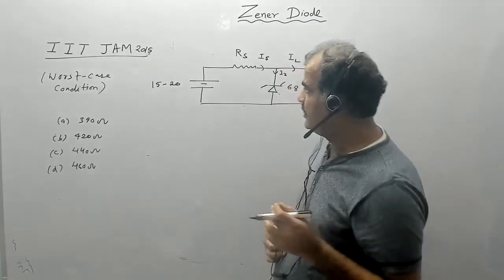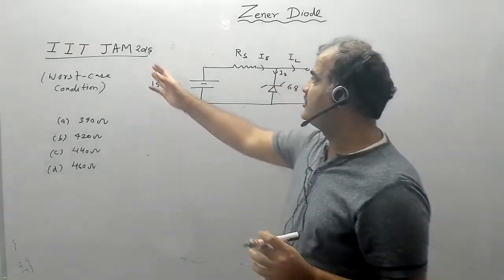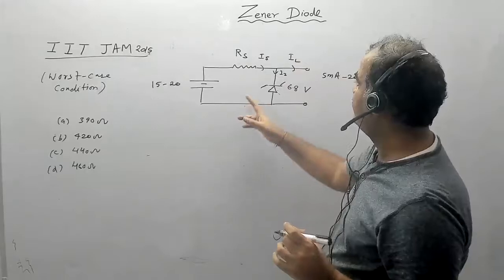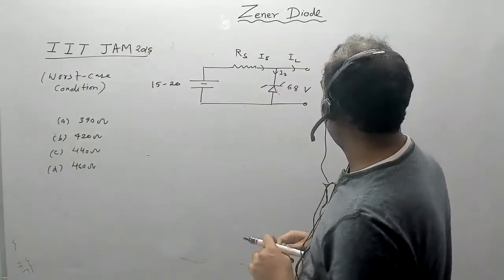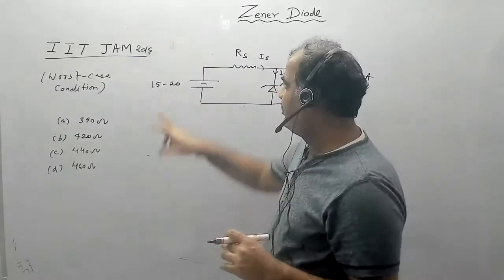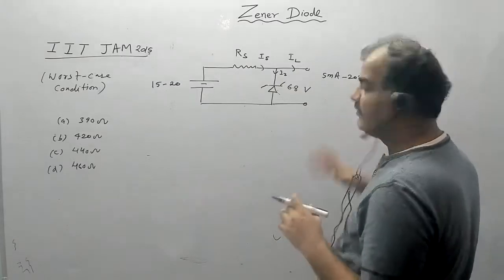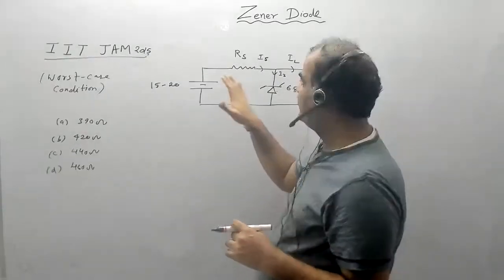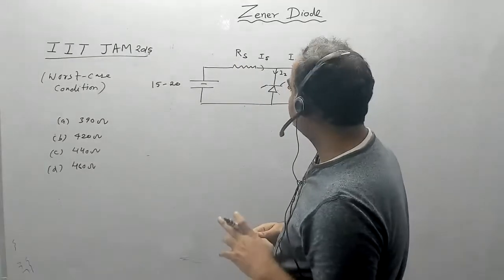Hello students, I'm solving a question on Zener diode which came in IIT JM 2015. In this question, they have given a Zener diode regulating circuit, and they are asking: V input is changing from 15 to 20 volts, and the load current varies from 5 milliampere to 20 milliampere. What should be the value of the series resistance Rs?